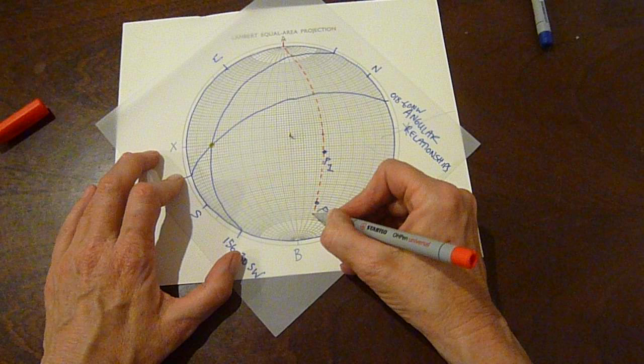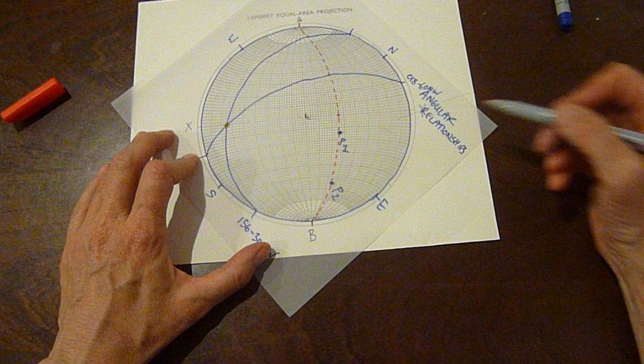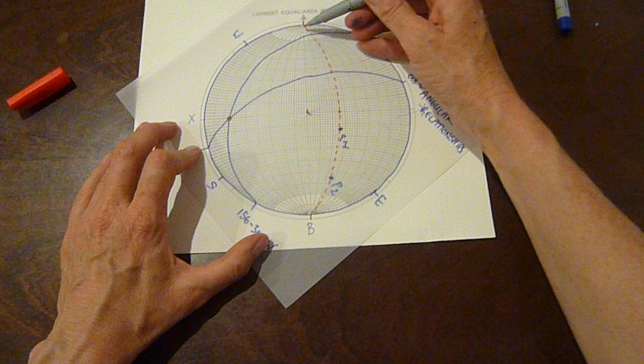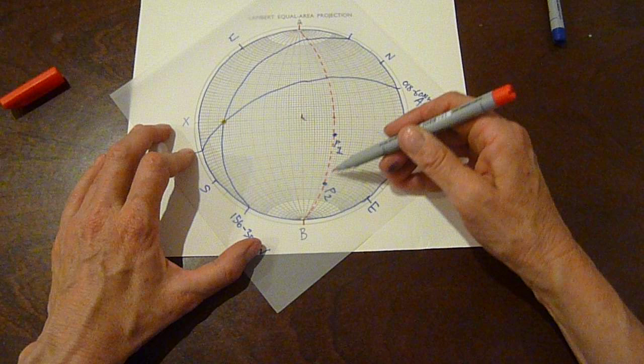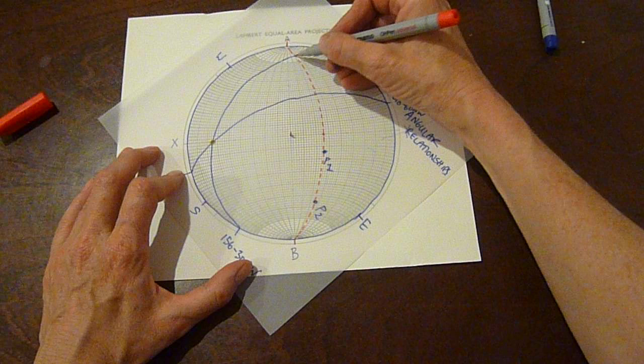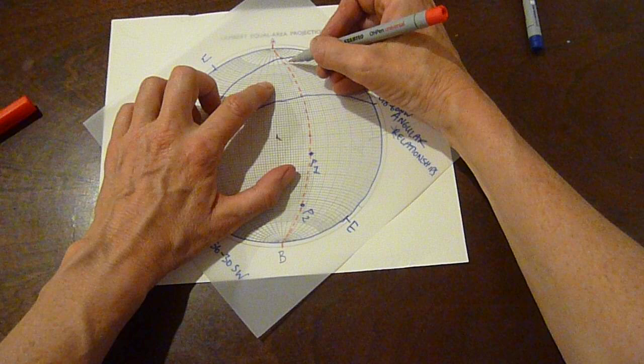It always picks up the poles of the planes of interest. And what you can do is use this plane like a protractor because the great circle is just divided up into 90 degrees to the halfway mark. Another 90 makes 180 degrees around that great circle.